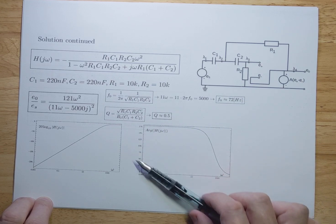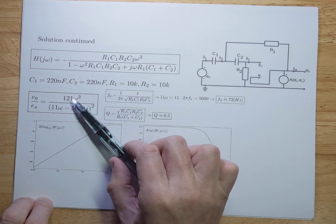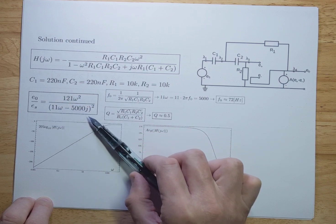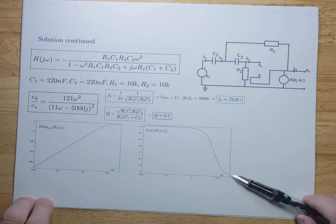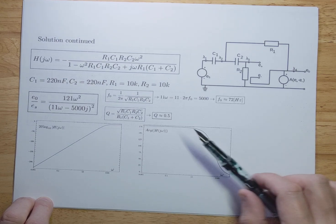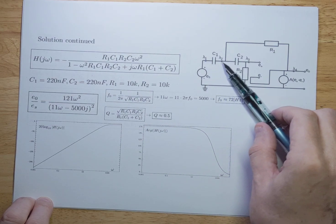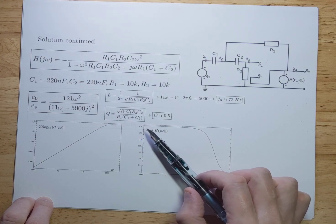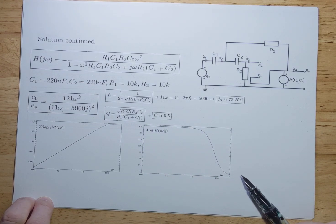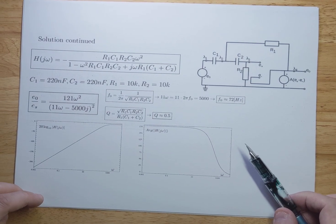Now let's look at the argument. The argument starts at 180 degrees and goes all the way down to 0. You can verify this: when omega is very large, the terms reduce to a real number, so the argument is 0. When omega is very small, the argument should be 180 degrees — because each capacitor can contribute a maximum 90-degree phase shift, and with two capacitors you get 2 times 90, which is 180 degrees when omega is really small. As omega increases it goes back to 0, because at very large omega you get a real number and therefore no argument — the argument is 0.